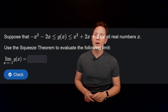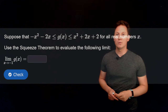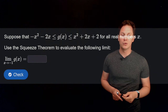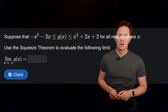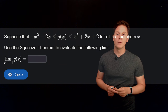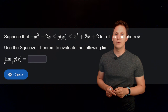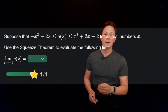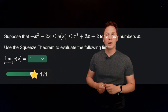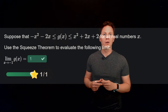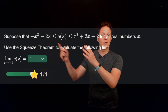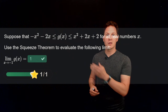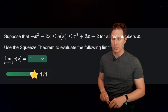Next question: suppose that g(x) is sandwiched between negative x squared minus 2x and x squared plus 2x plus 2 for all real numbers x. Use the squeeze theorem to evaluate the limit as x approaches negative 1 of g(x). The lower and upper bounds both have a limit of positive 1 as x approaches negative 1, which you can find by direct substitution. So by the squeeze theorem, the function in the middle g(x) must have the same limit as x approaches negative 1.